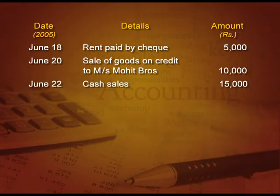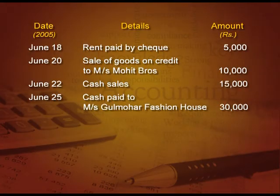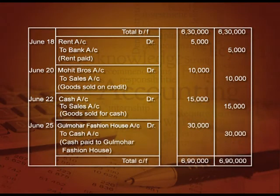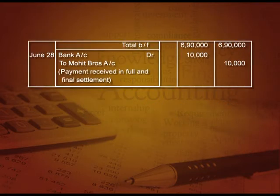Next: cash sales 15,000. The entry will be cash account debit to sales 15,000. In the cash account we will write 'To Sales 15,000', and in the sales account we will write 'By Cash 15,000'. Next: cash paid to Gul Mohar 30,000. Entry is Gul Mohar account debit to cash 30,000 — in Gul Mohar account 'To Cash 30,000', in cash account 'By Gul Mohar 30,000'. Next: received a cheque from Mohith Brothers 10,000 — bank account debit to Mohith Brothers 10,000. In bank account 'To Mohith Brothers 10,000', in Mohith account 'By Bank 10,000'.